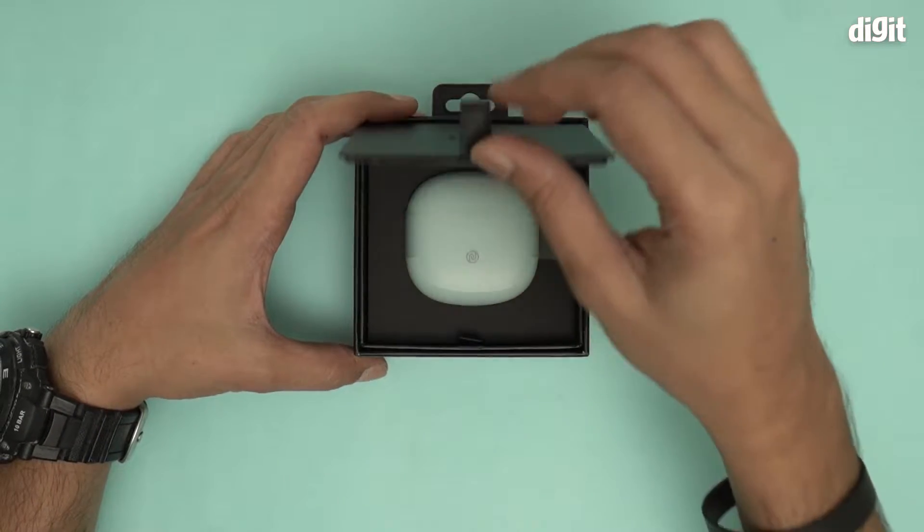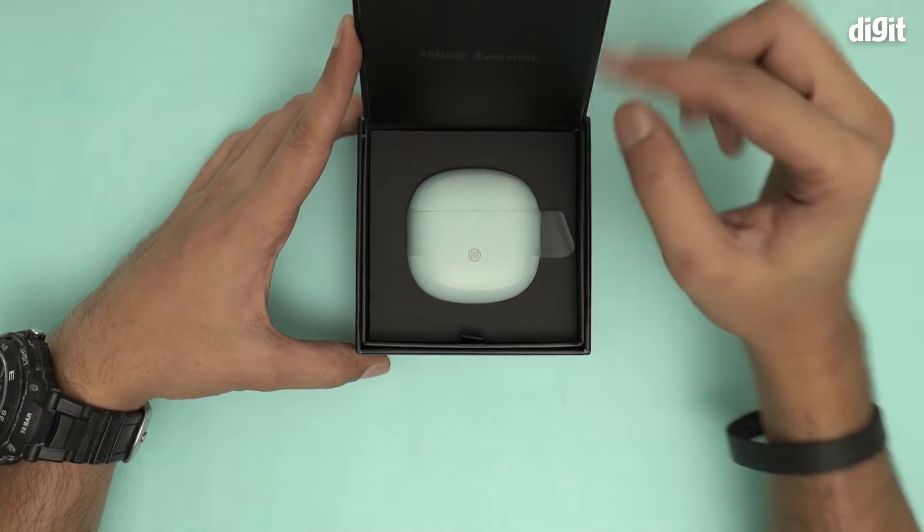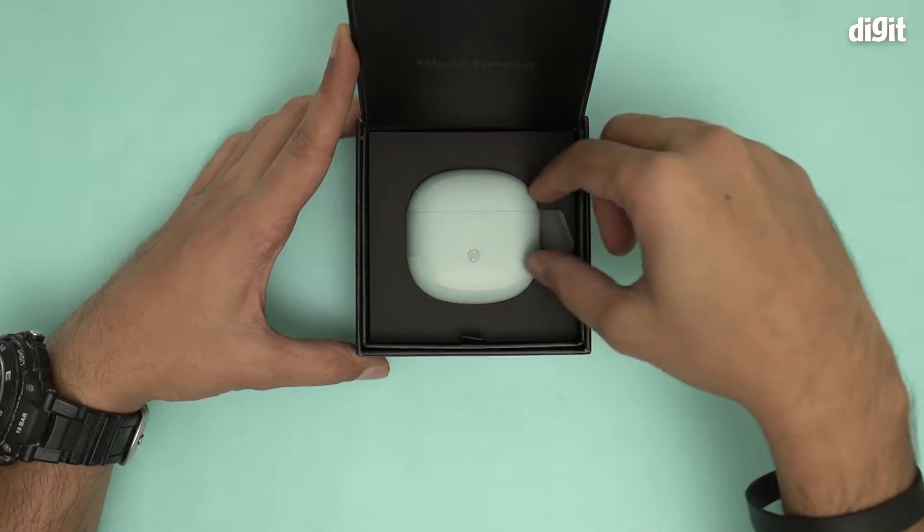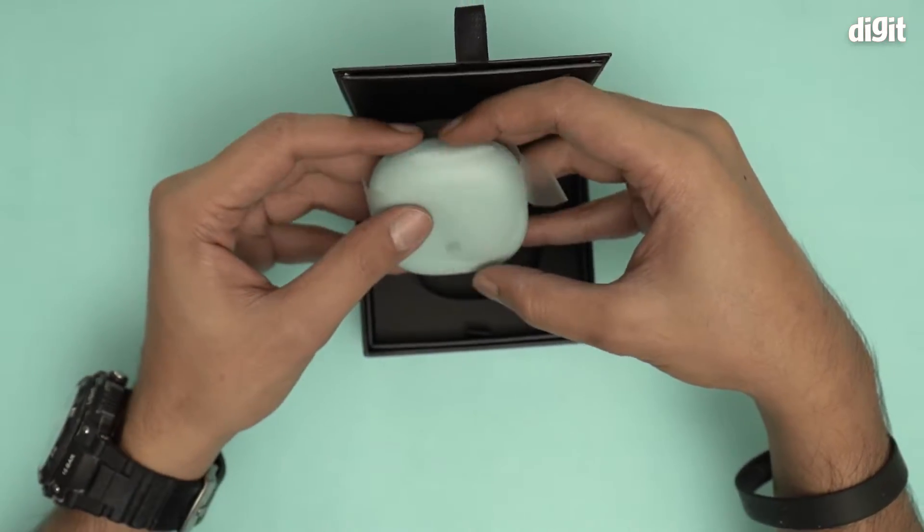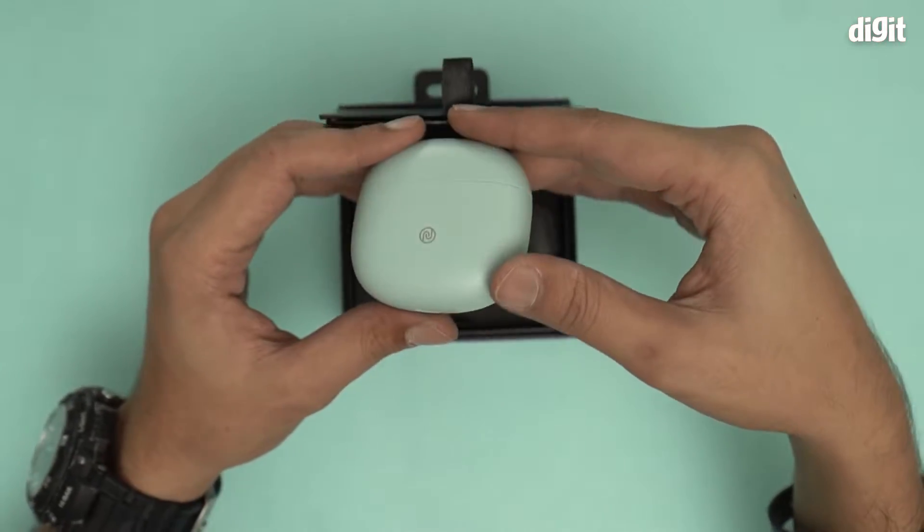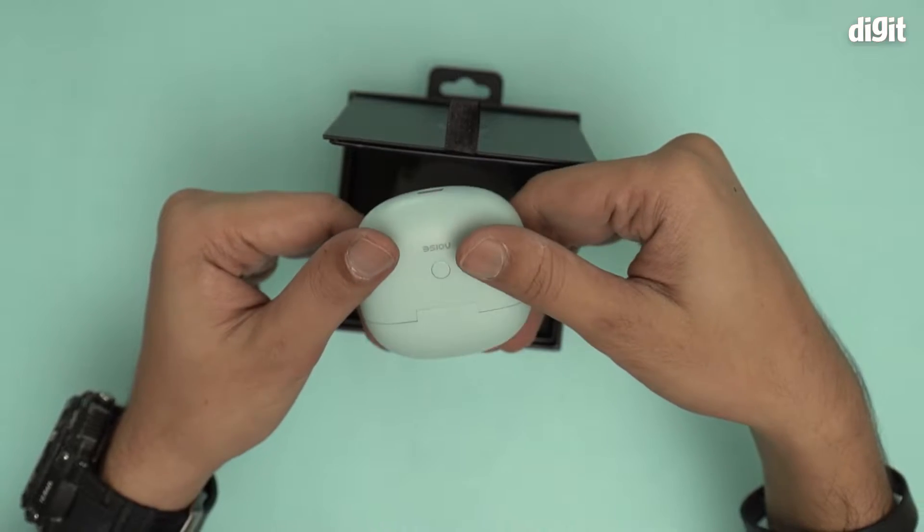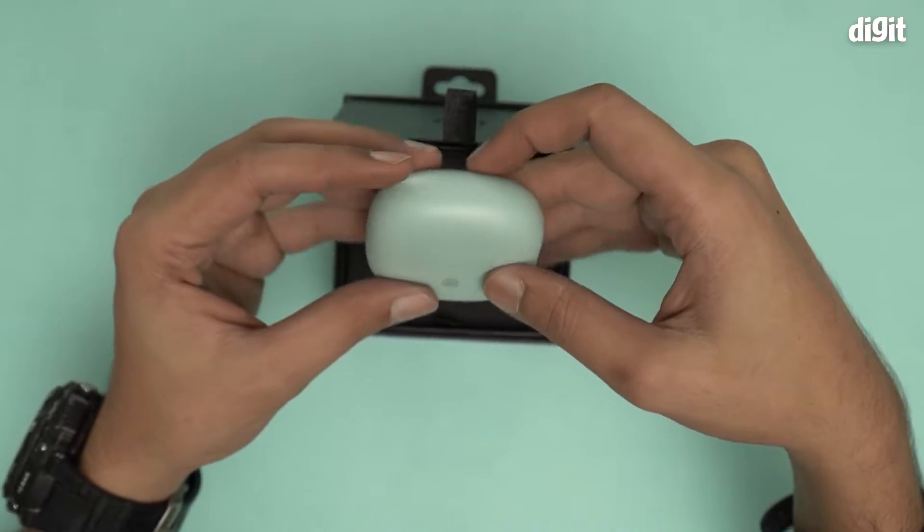There's another lid on top, lift it like this, and there we have the charging case. Lovely blue colored charging case, not as small as other charging cases or earphones that you see. This is actually very good looking, very sleek texture and has a nice finish on it.